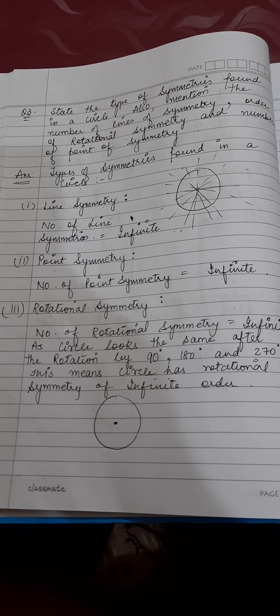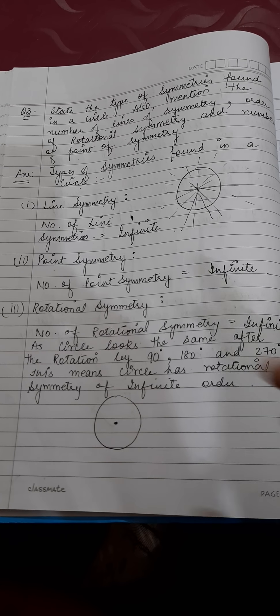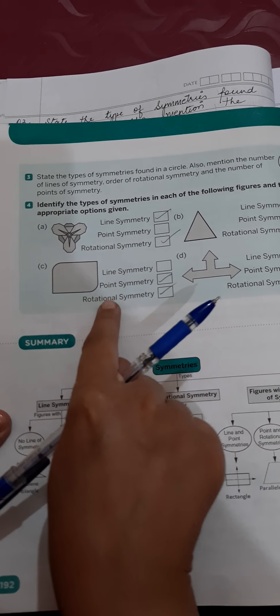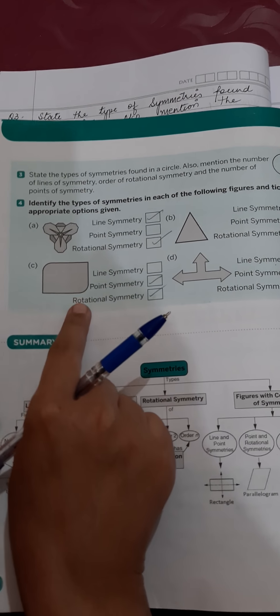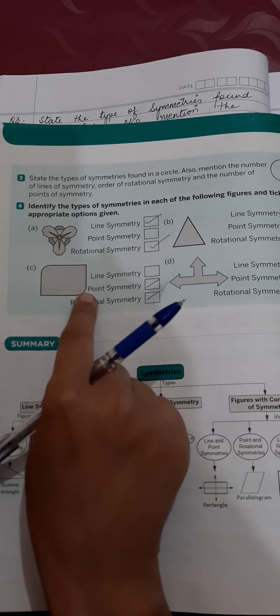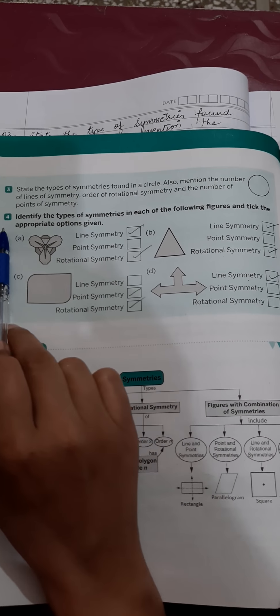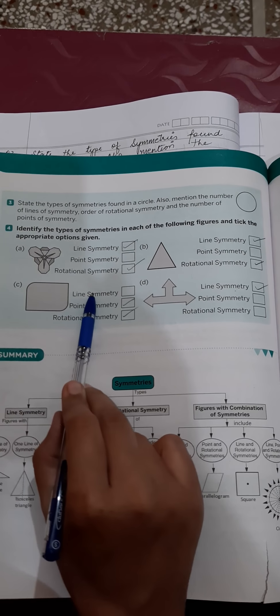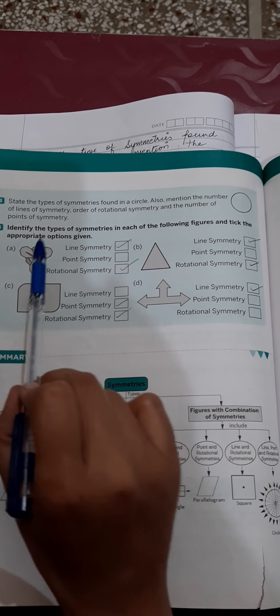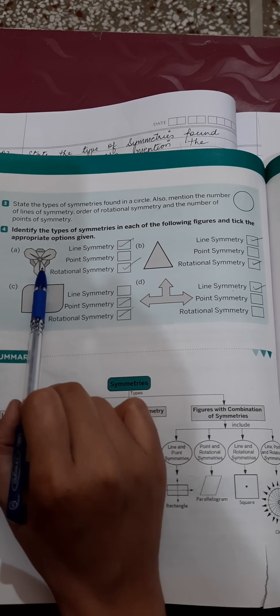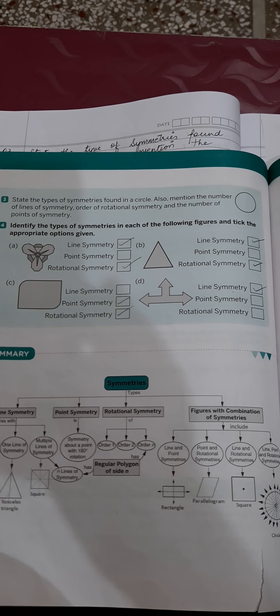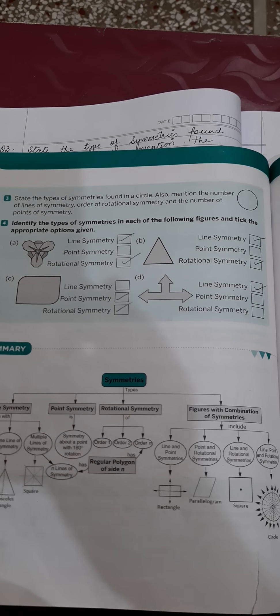This was exercise 14.3. Question four you will try by yourself in the book to test your knowledge — you have to look at the figures and tell which symmetries each figure has. Thank you.